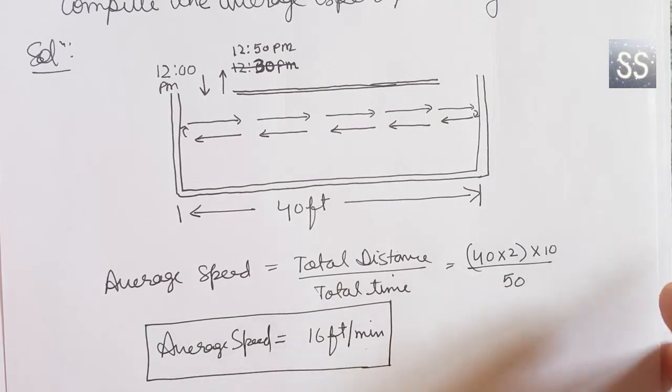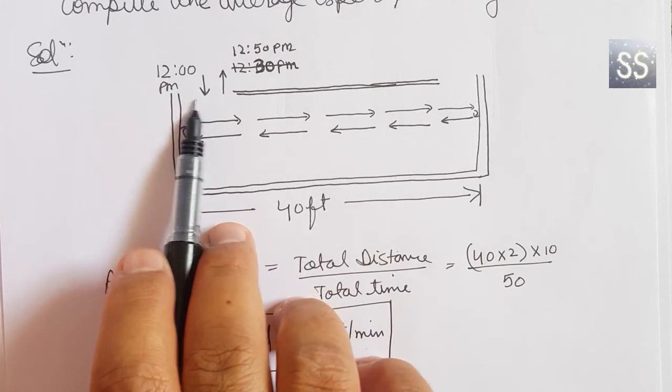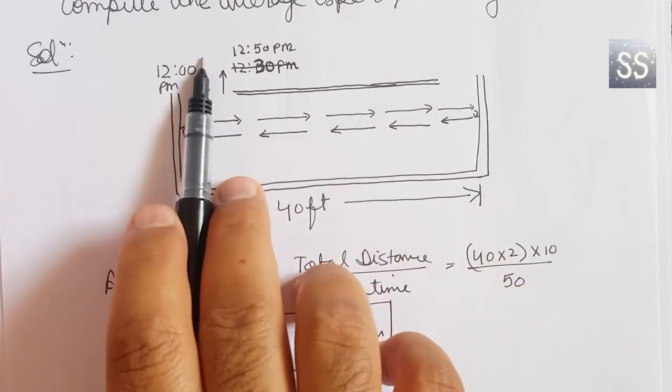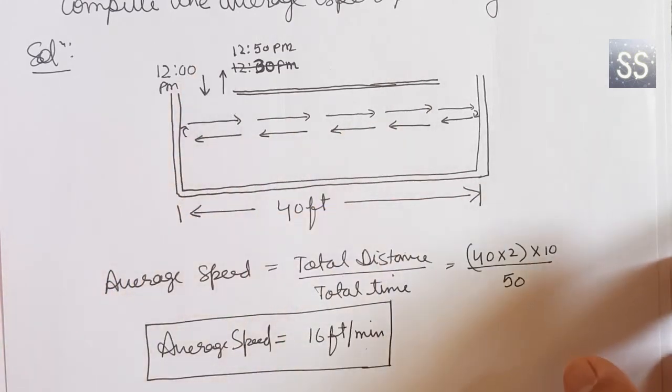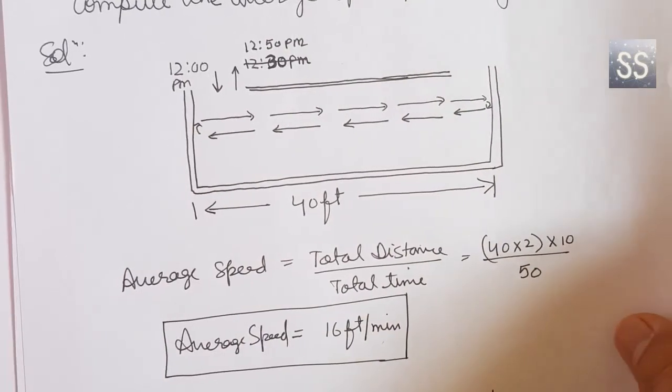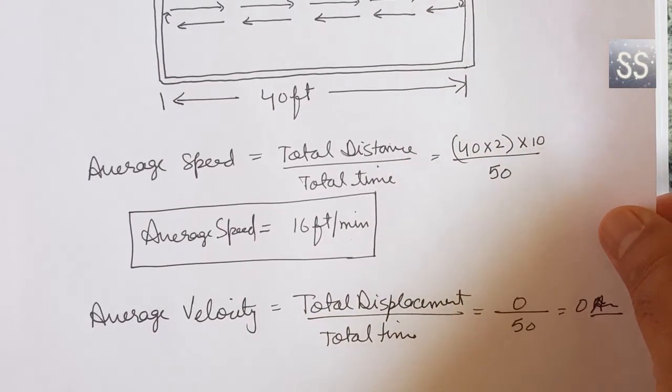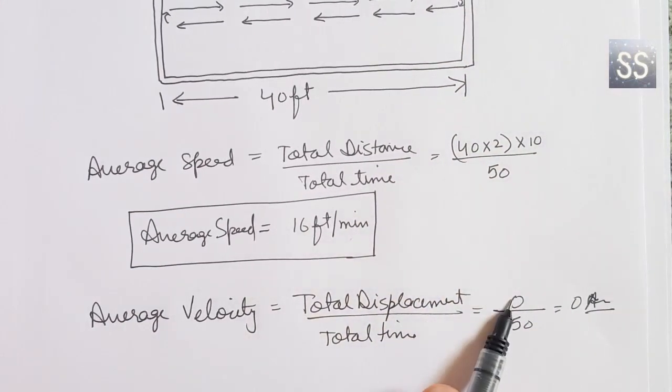Now we need to find velocity also. So total displacement - she started from here and she entered and she left from here only. So total displacement will be 0. So average velocity will also be 0 because the total displacement is 0. Thank you.